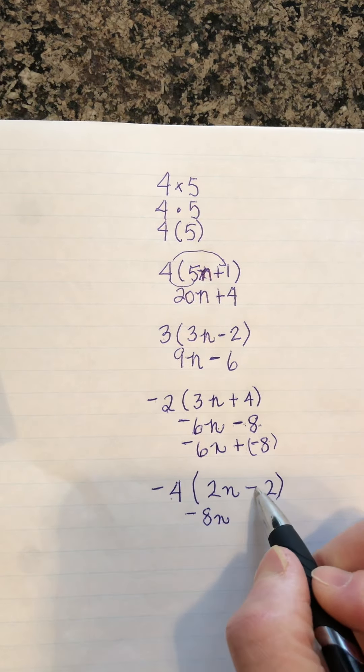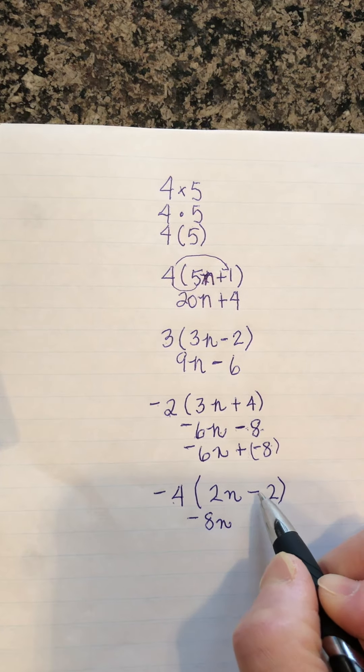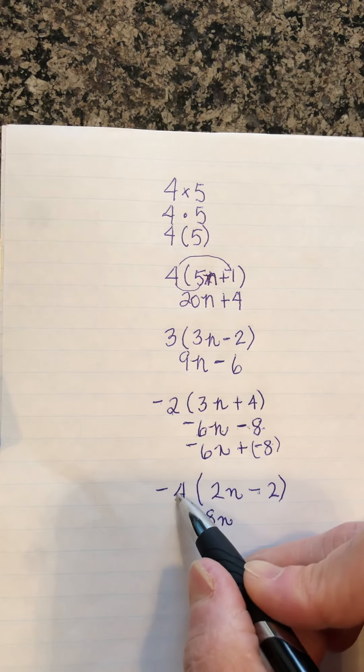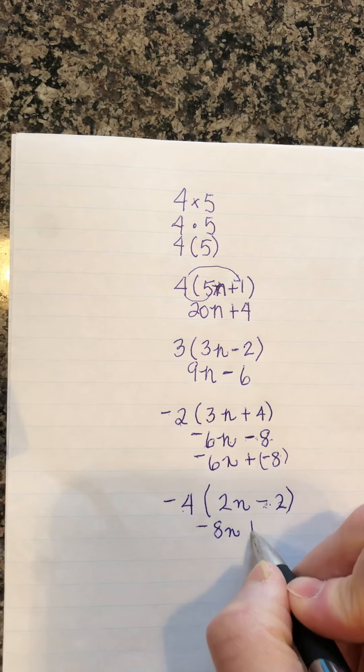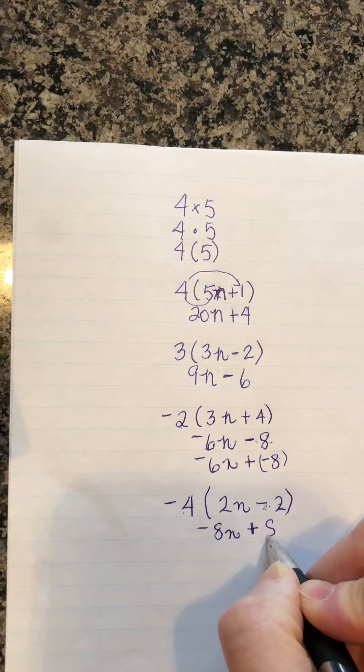Negative 4 times negative 2. Let's do times negative 2. Negative 4 times negative 2 is positive 8, so we now have a plus 8.